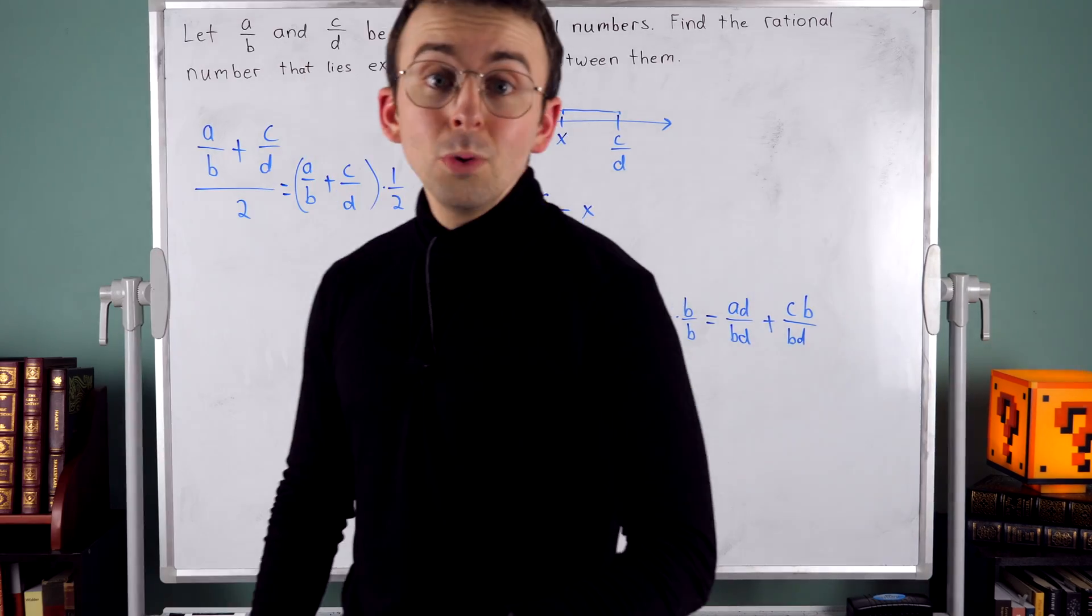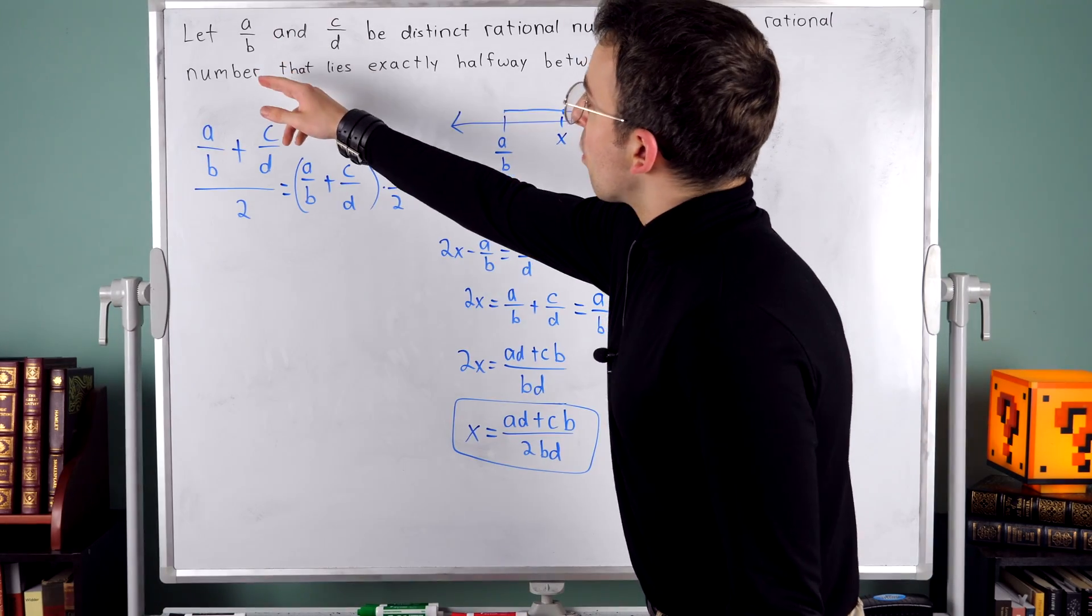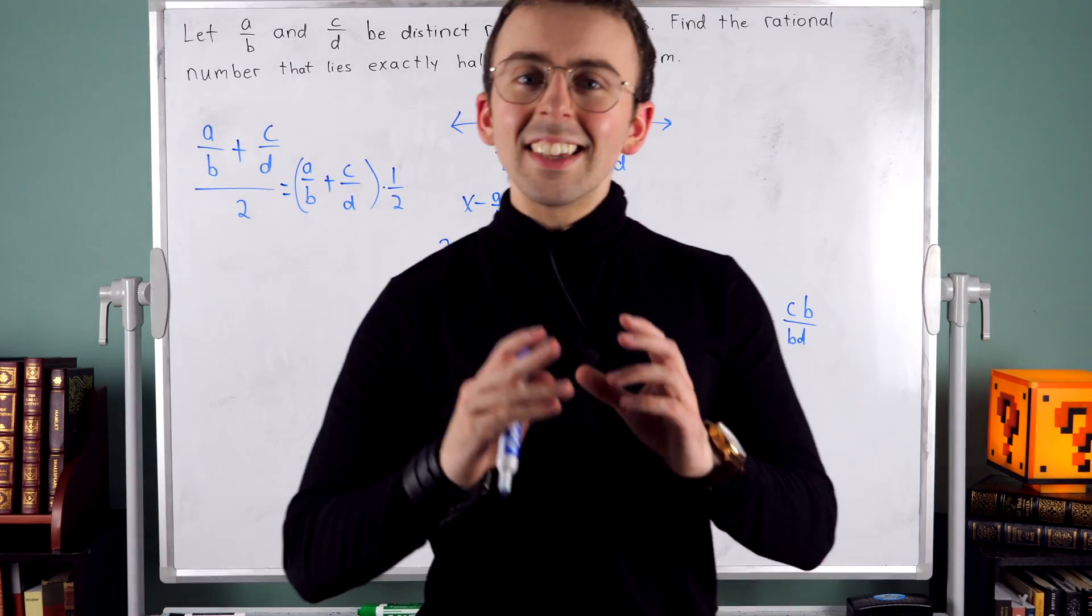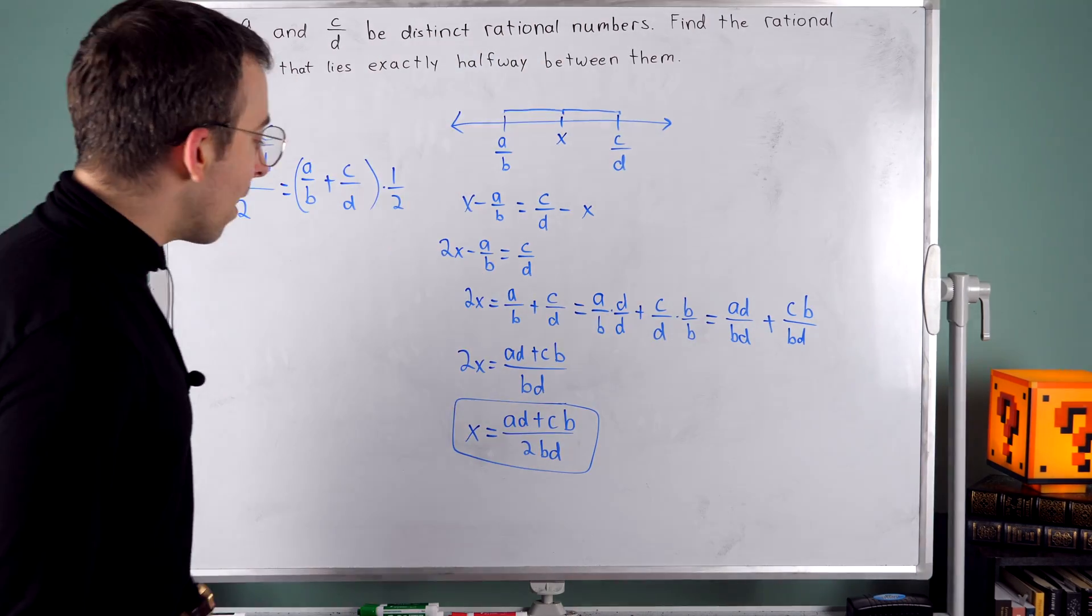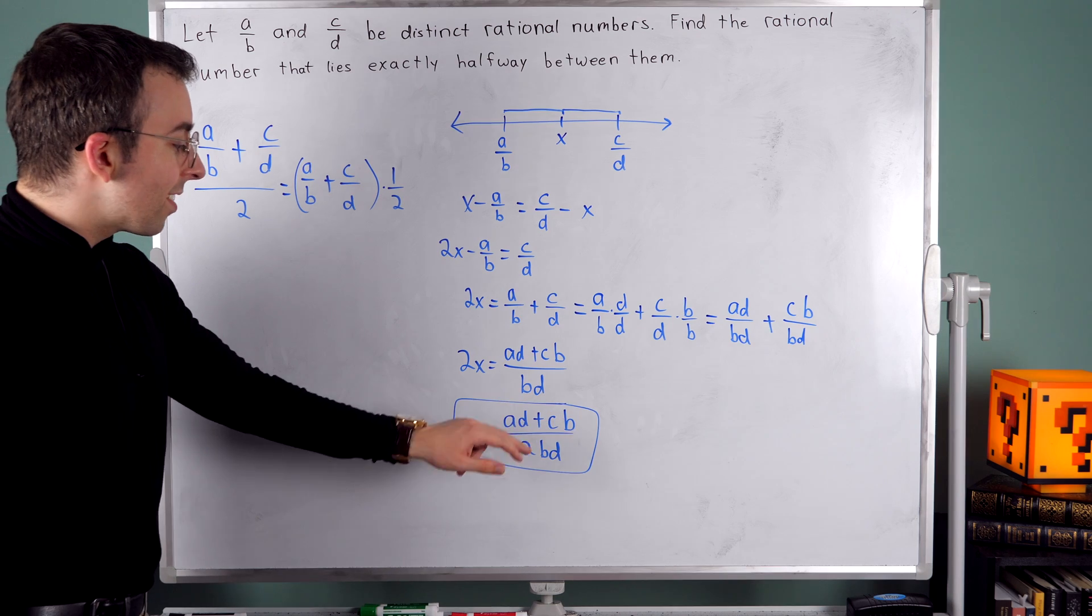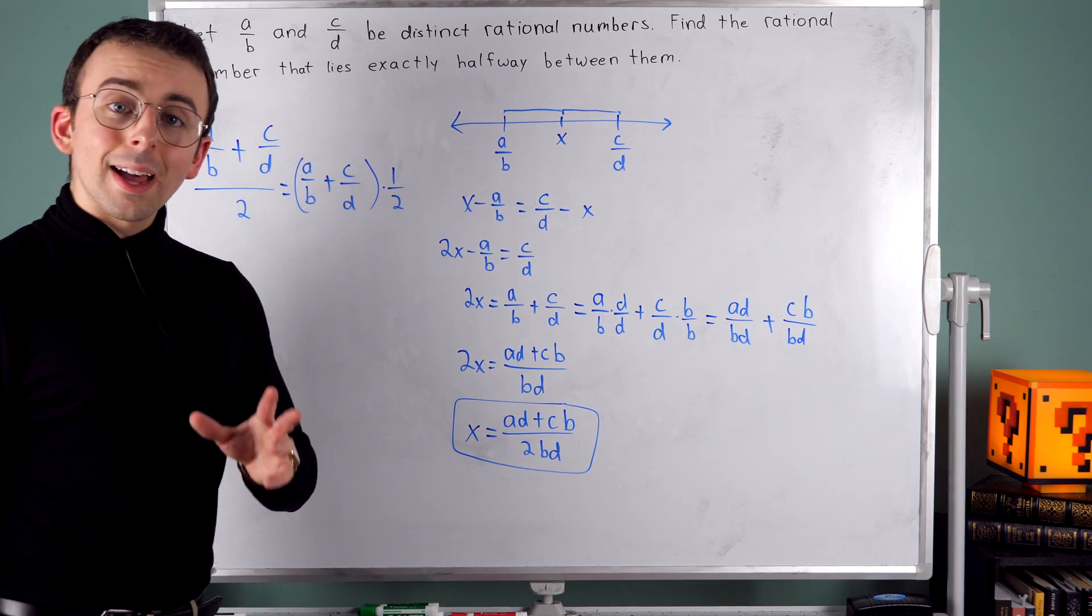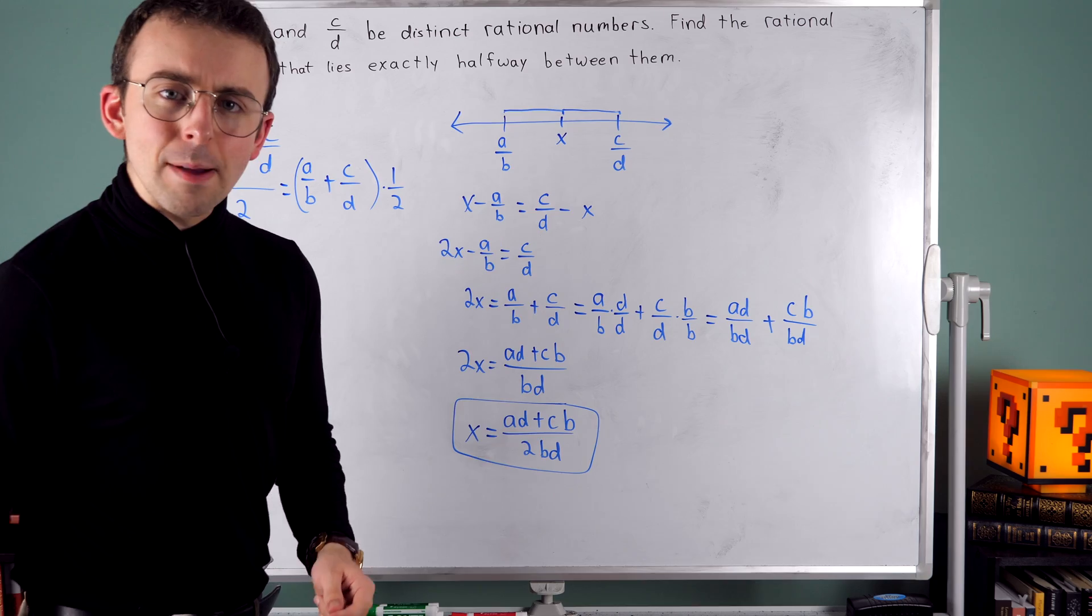If I've got two distinct rational numbers, A over B and C over D, the number that's exactly halfway between them is A D plus C B divided by two B D. Let's see a quick example.